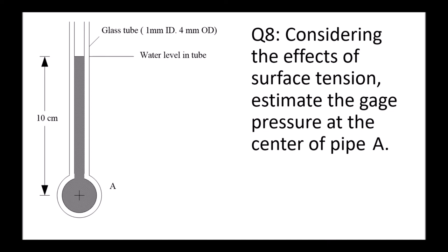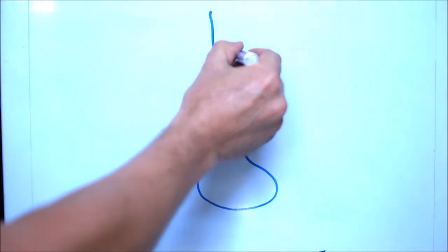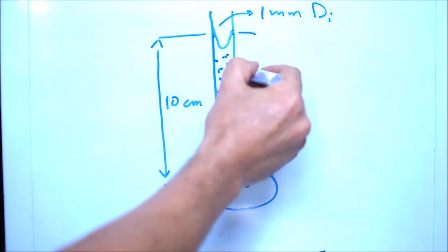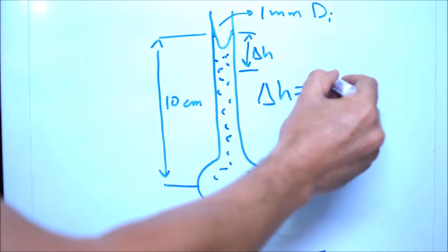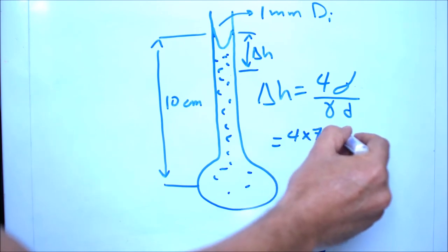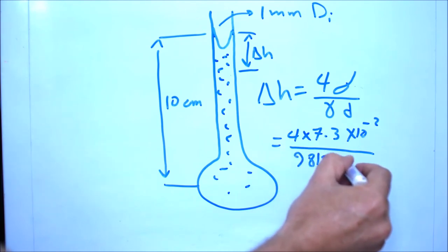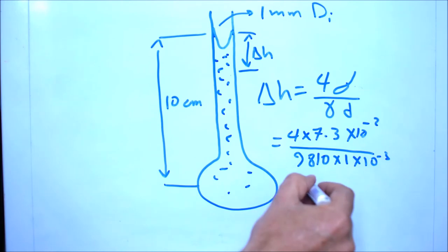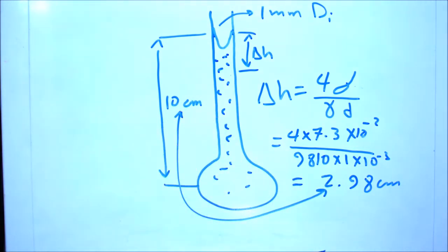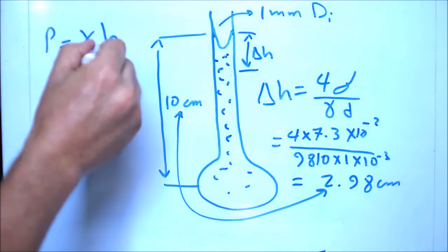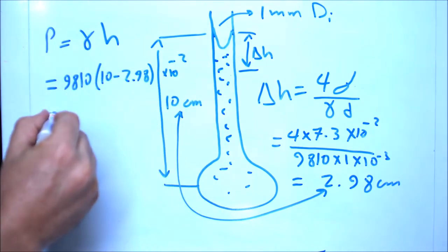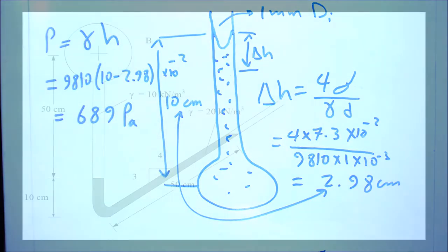Question eight: we have a capillary tube and want to determine the pressure at point A considering the capillary effect. The measured height is 10 centimeter, but the water-glass reaction causes a capillary effect with additional delta H. Delta H equals 4 sigma divided by gamma times d, where sigma is the surface tension of water. So 4 times 7.3×10⁻² divided by 9810 times 0.001, giving a capillary height of 2.98 centimeter. The actual pressure is gamma times the actual height: 9810 multiplied by (10 minus 2.98) centimeters = 689 Pascal.